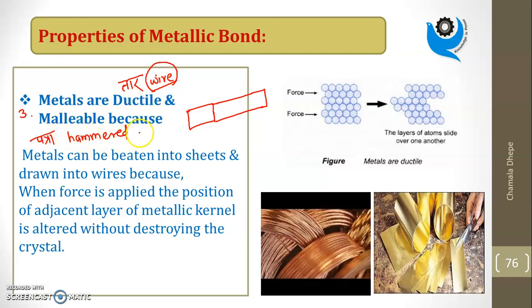Metals can be beaten into sheets and drawn into wires because when force is applied, the position of adjacent layers of the metallic kernel is altered without destroying the crystal. See this crystal of metal with atoms and electrons. If I apply force here, this layer moves but the crystal doesn't break or destroy. I can convert it into thin wires or sheets.